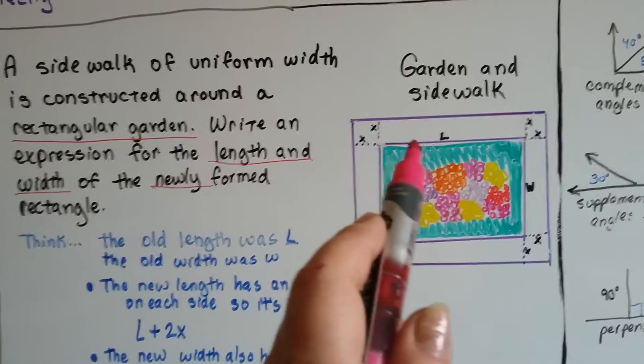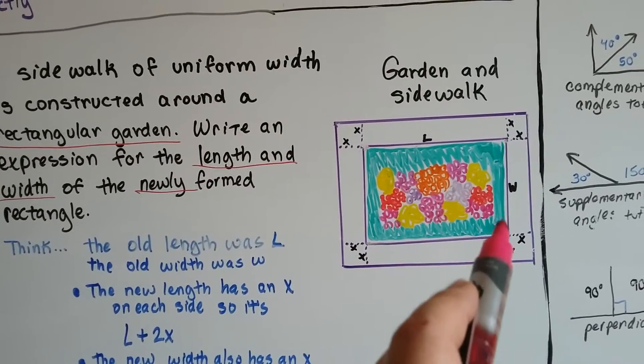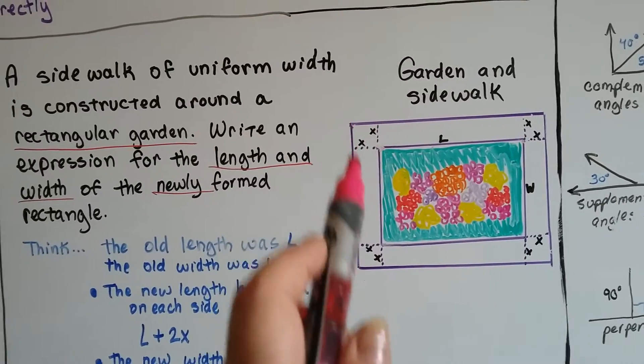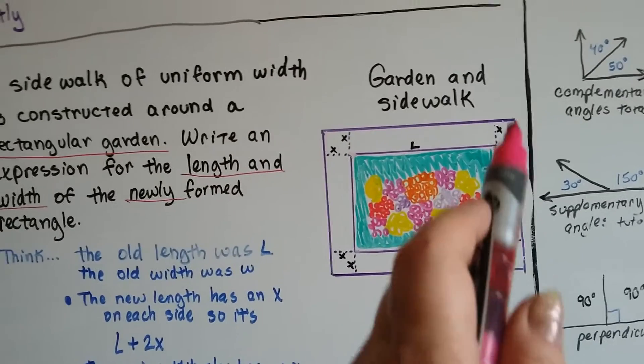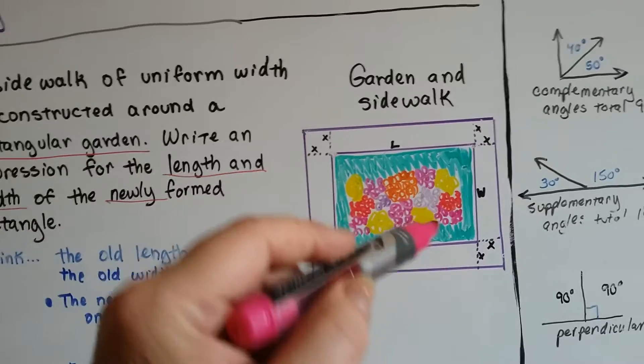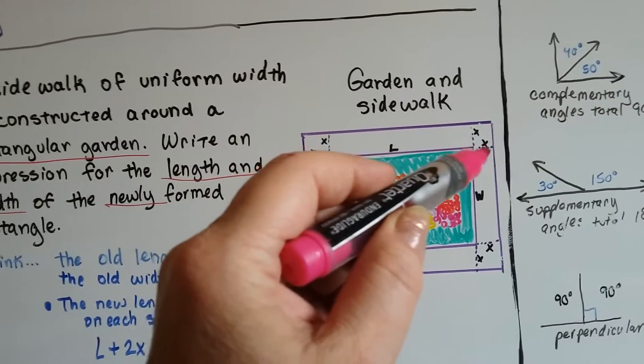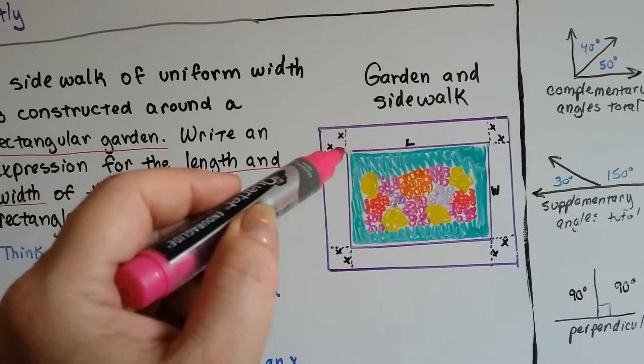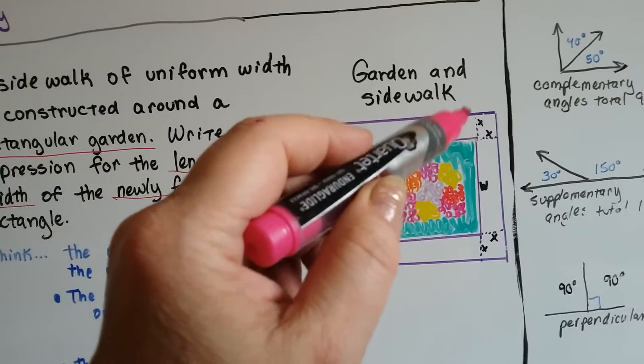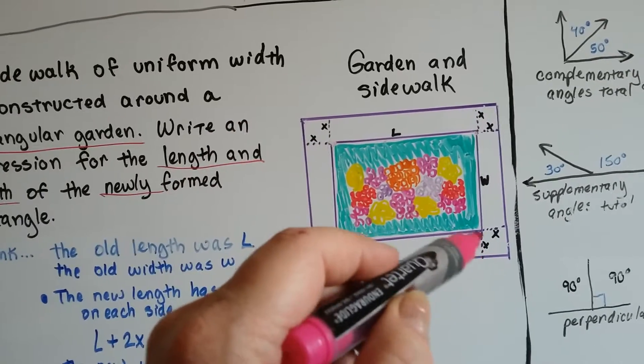So I saw that this was the original length, and this was the original width. So if they put a sidewalk around it, there was going to be a new length and a new width. The length was going to have a little extra piece here and a little extra piece here, and the width was going to have a little extra piece here and a little extra piece here.